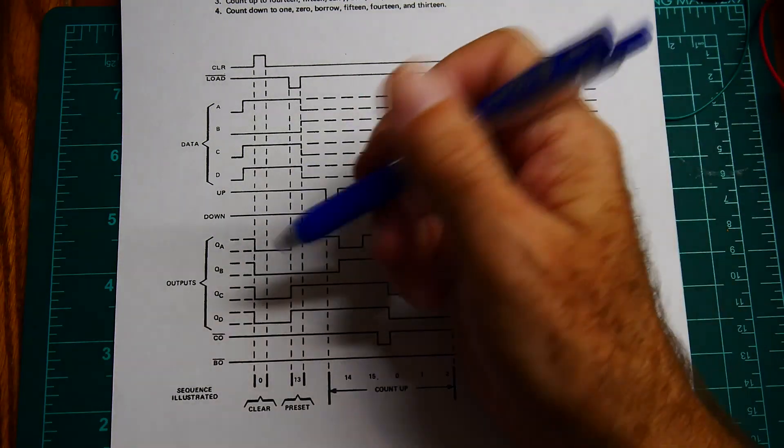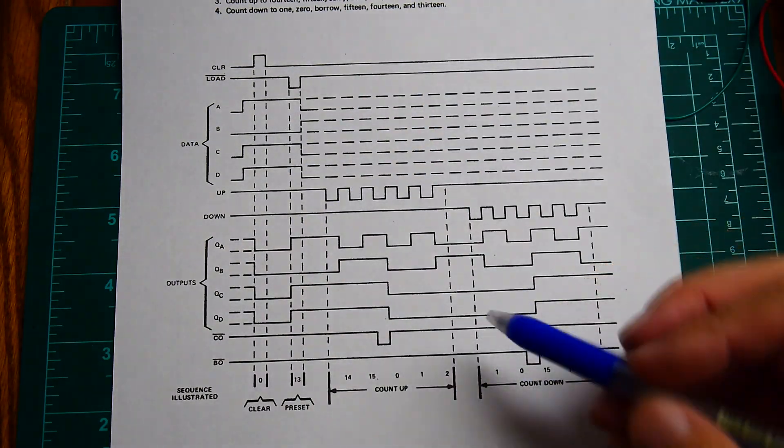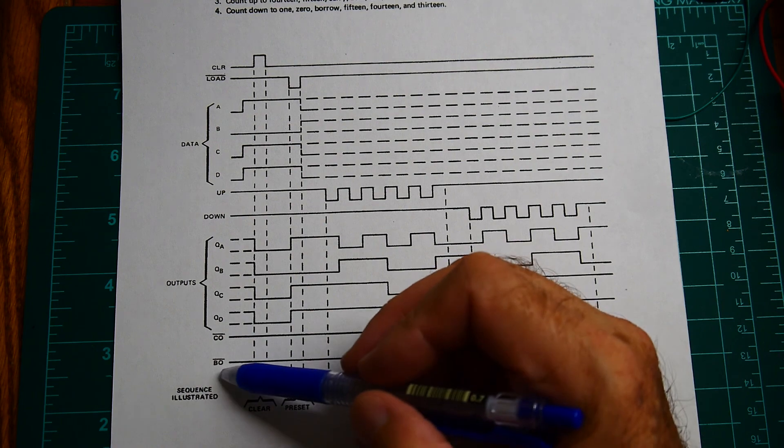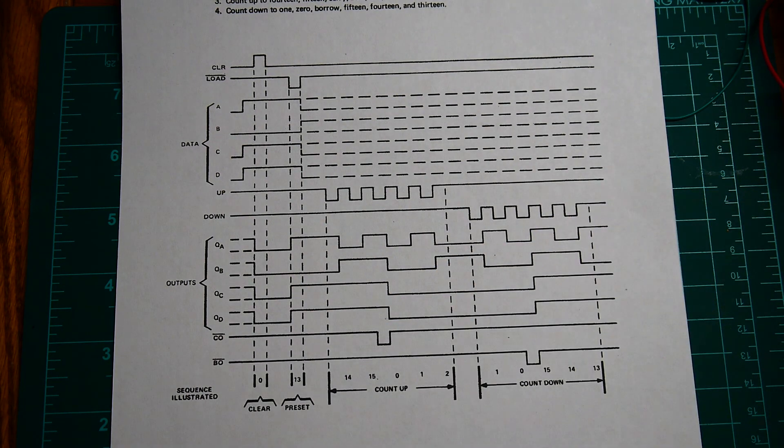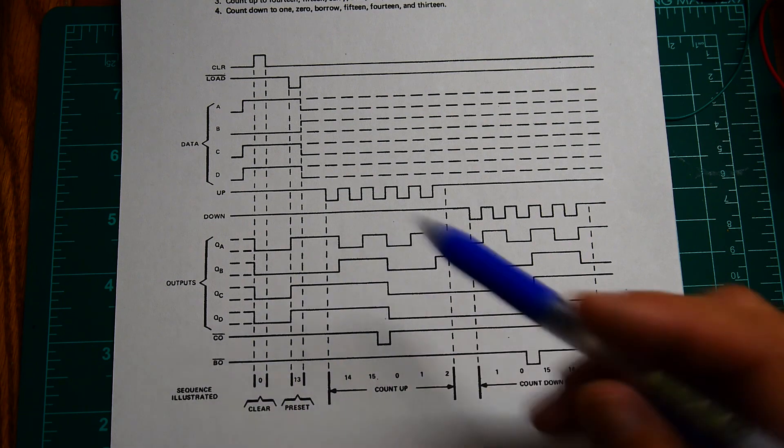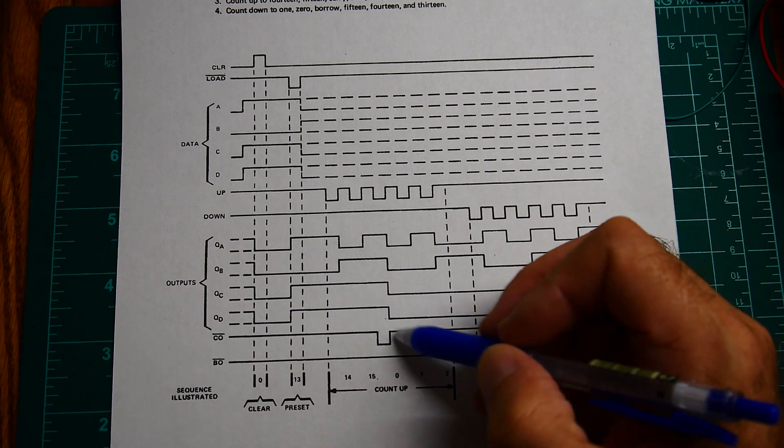And the way that you cascade these, there is a carry out and a borrow out for up counting and down counting and these are NOT gates so they're low going.